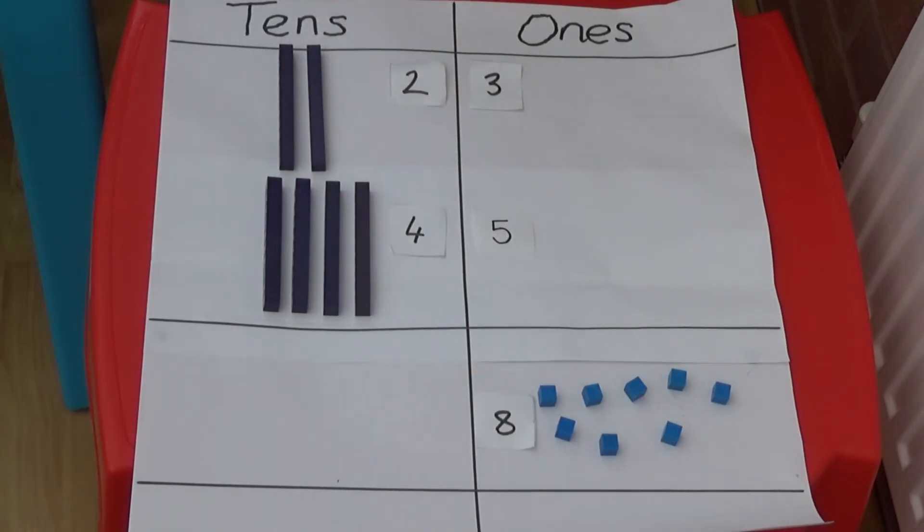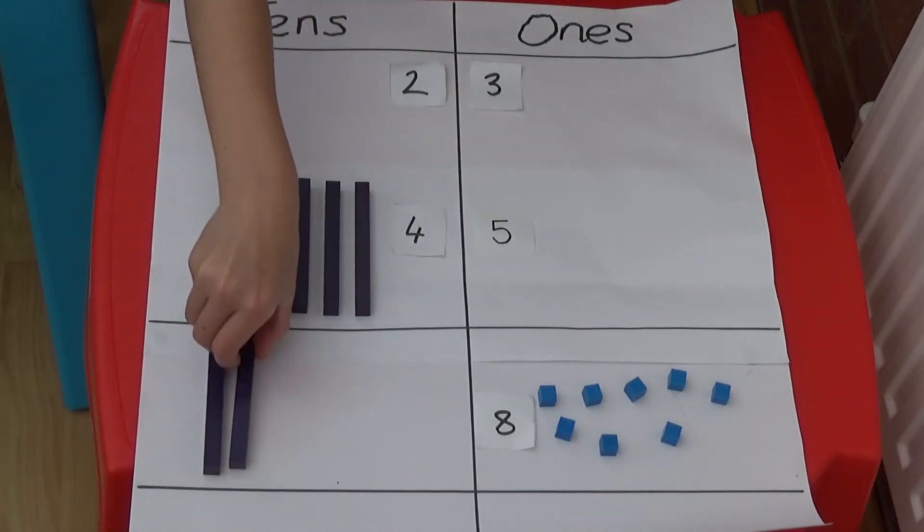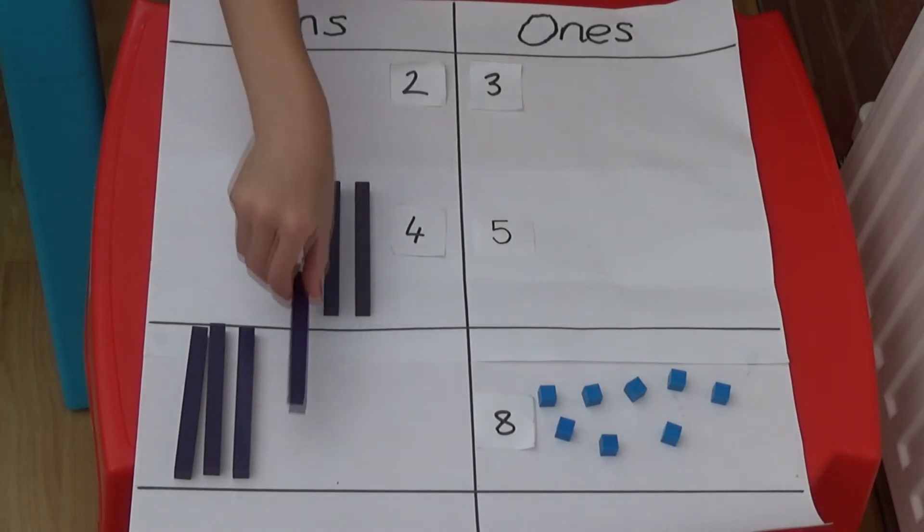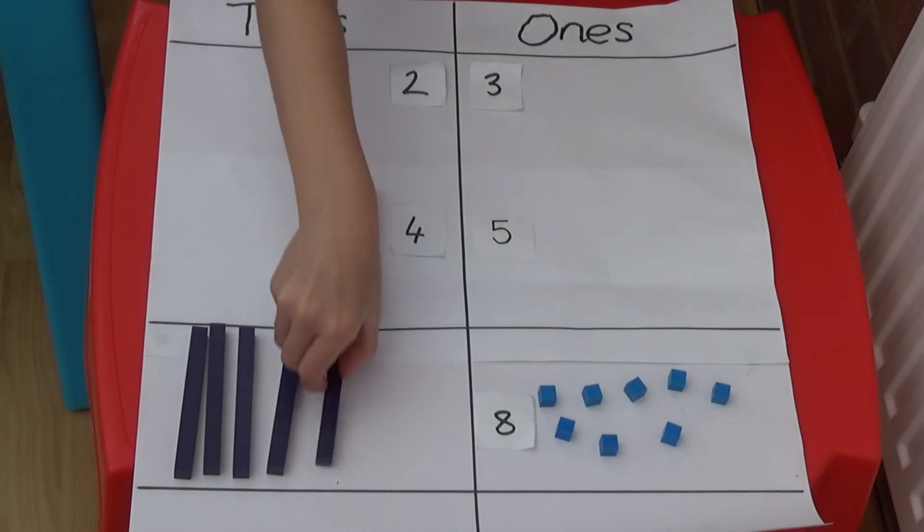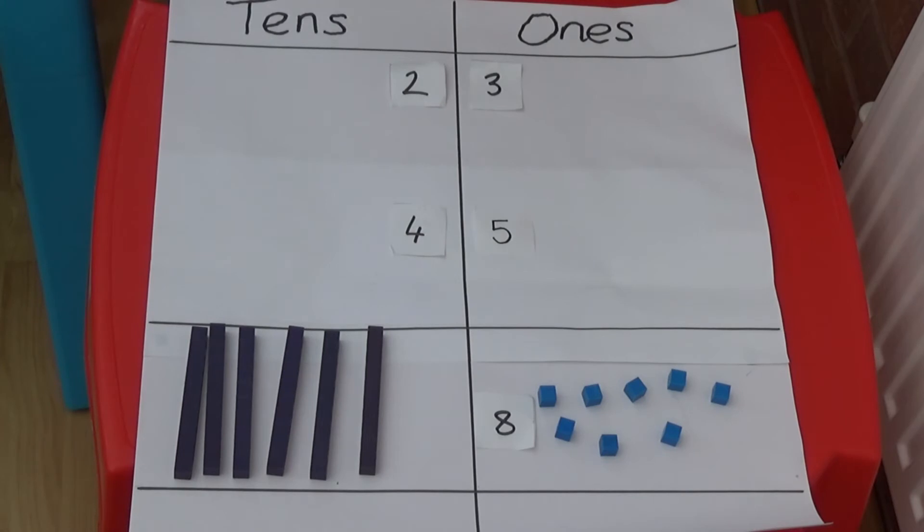Then I'm going to add the two tens and the four tens. So my tens add up to six tens which makes my number 60. So 23 add 45 equals 68.